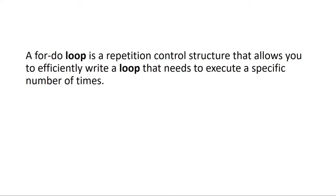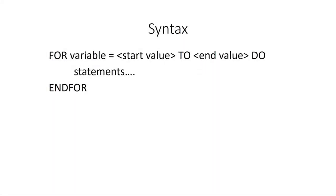The syntax for a for loop is: we have FOR, then the variable name which would be the counter, then you will have the start value and the end value. In between that we have the statements, and then the termination of the loop which is END FOR.